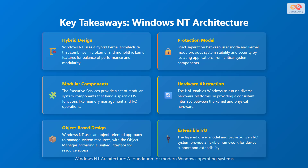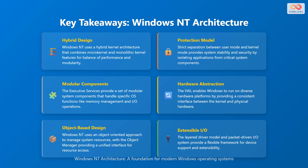To summarize, here are the key takeaways from our exploration of Windows NT architecture. First, Windows NT utilizes a hybrid kernel architecture, combining microkernel and monolithic kernel features for a balance of performance and modularity. Second, a strict separation between user mode and kernel mode provides system stability and security by isolating applications from critical system components. Third, the executive services provide a set of modular system components that handle specific operating system functions like memory management and input-output operations. Fourth, the hardware abstraction layer, or HAL, enables Windows to run on diverse hardware platforms by providing a consistent interface between the kernel and physical hardware.